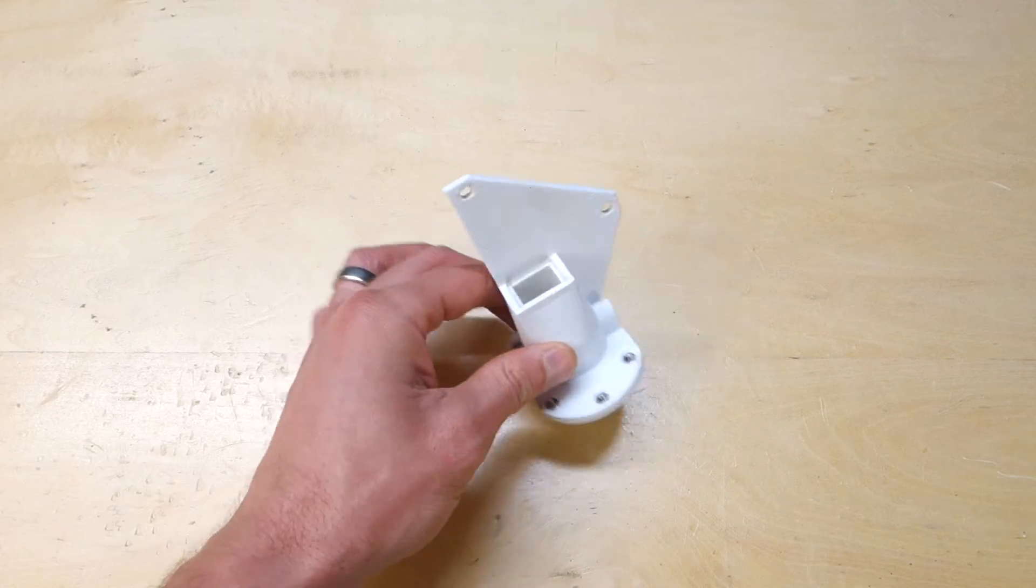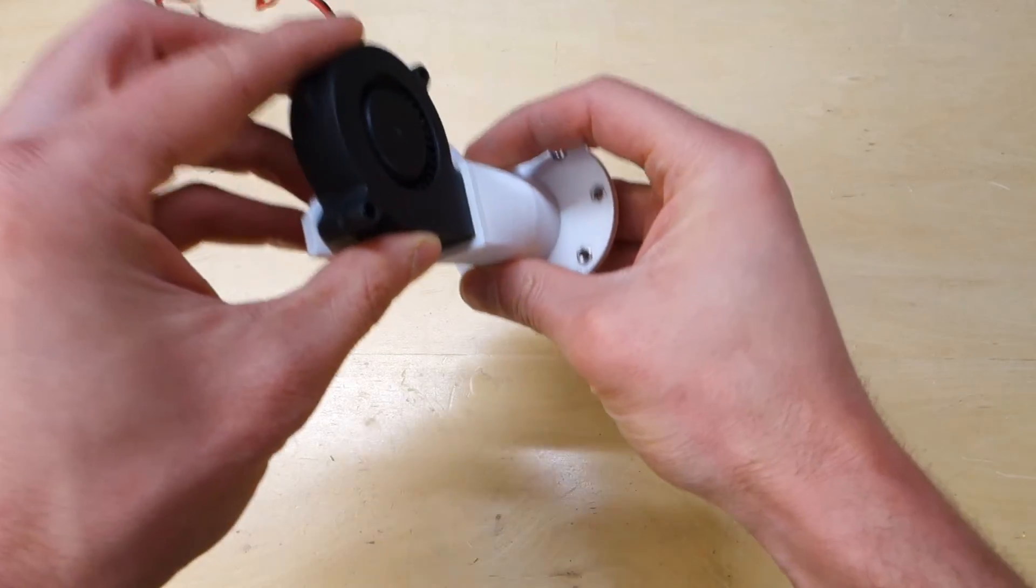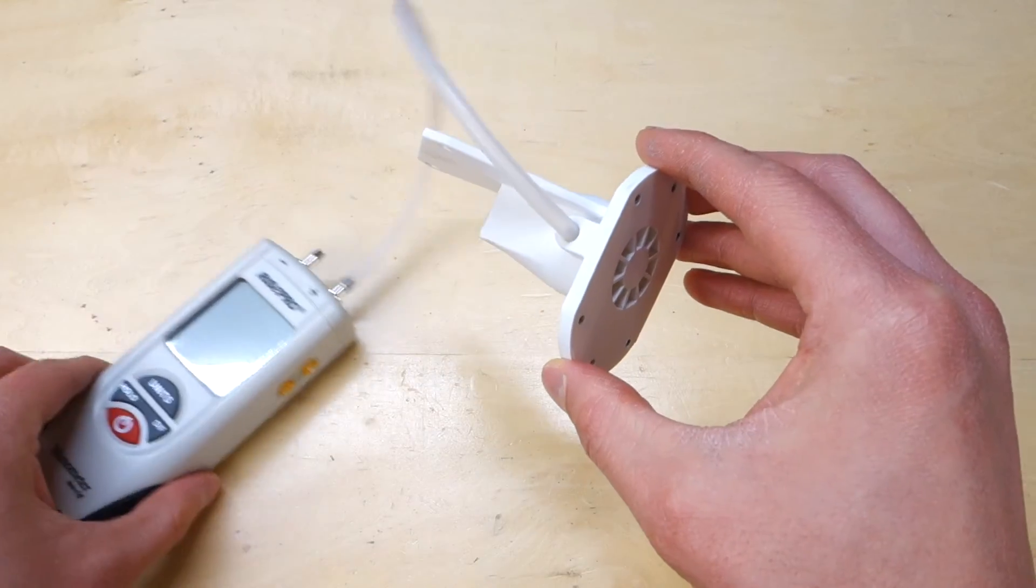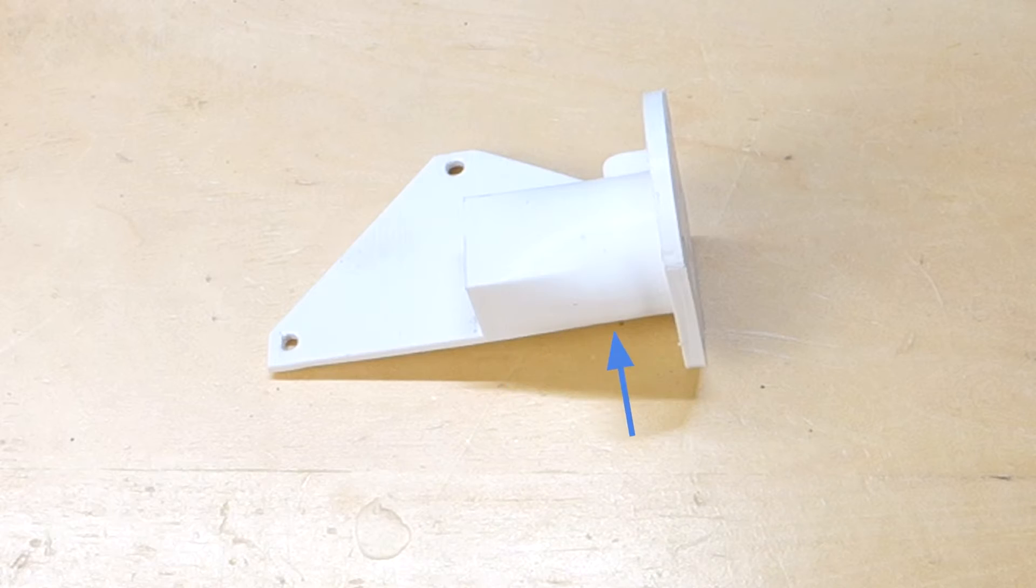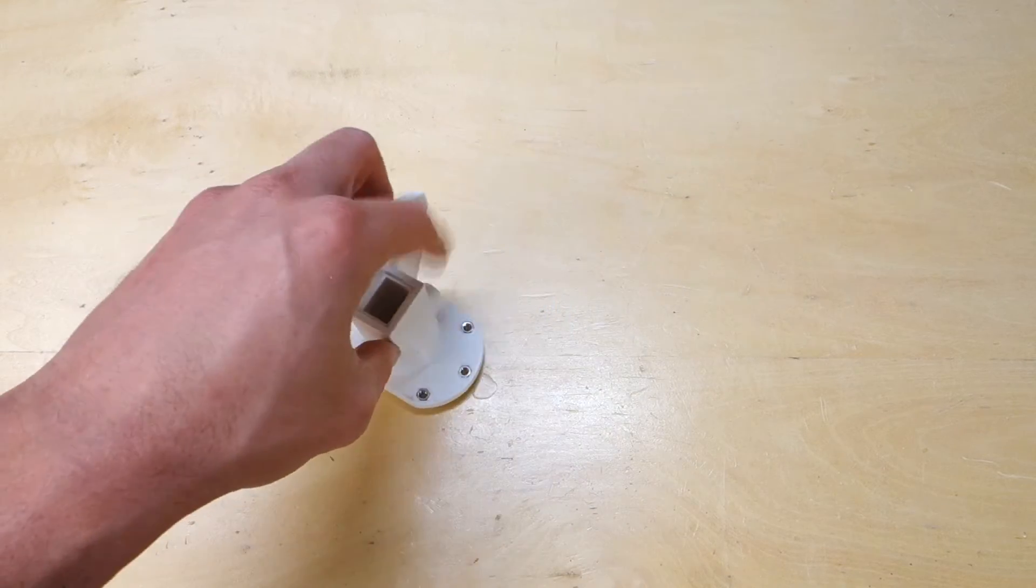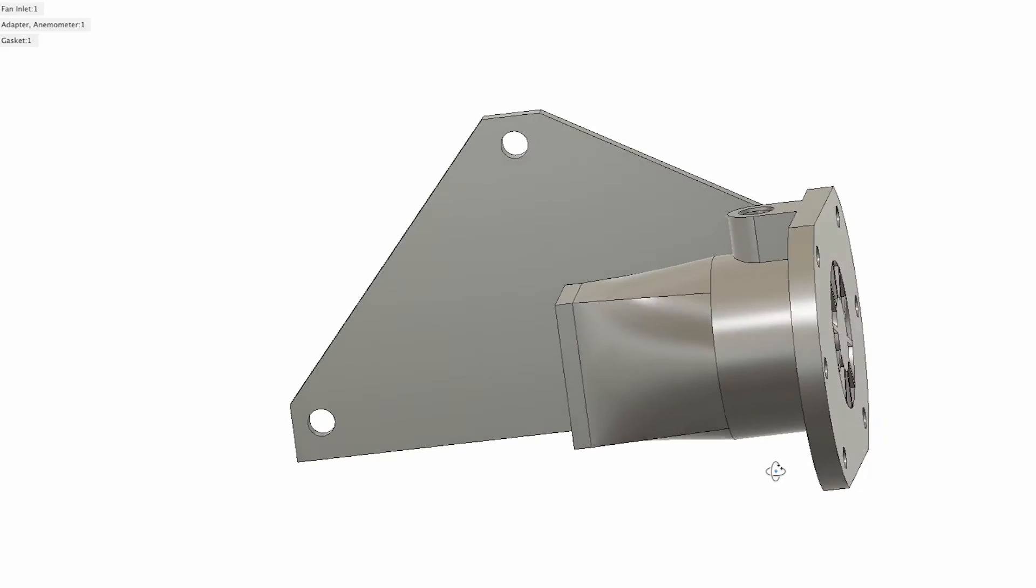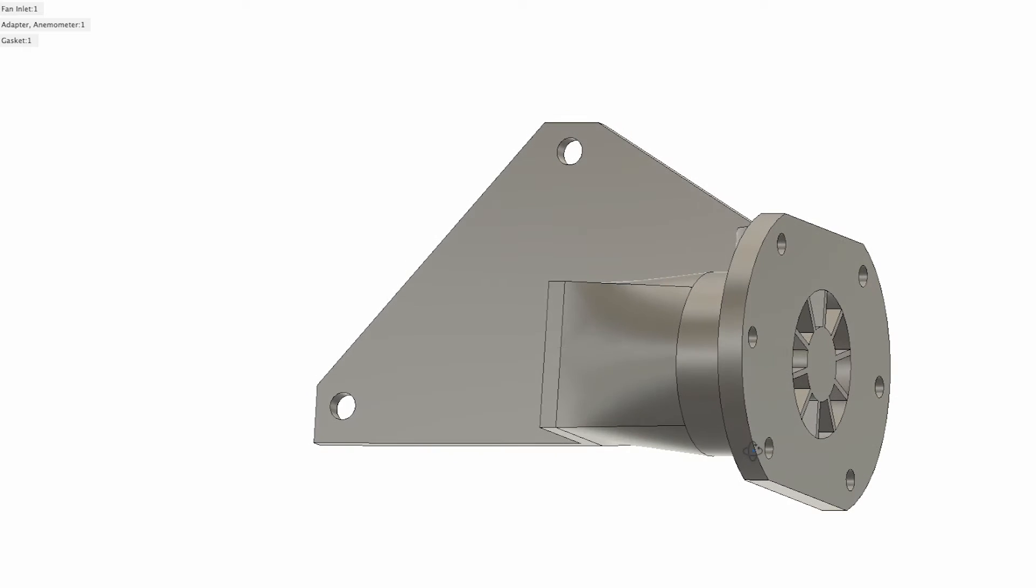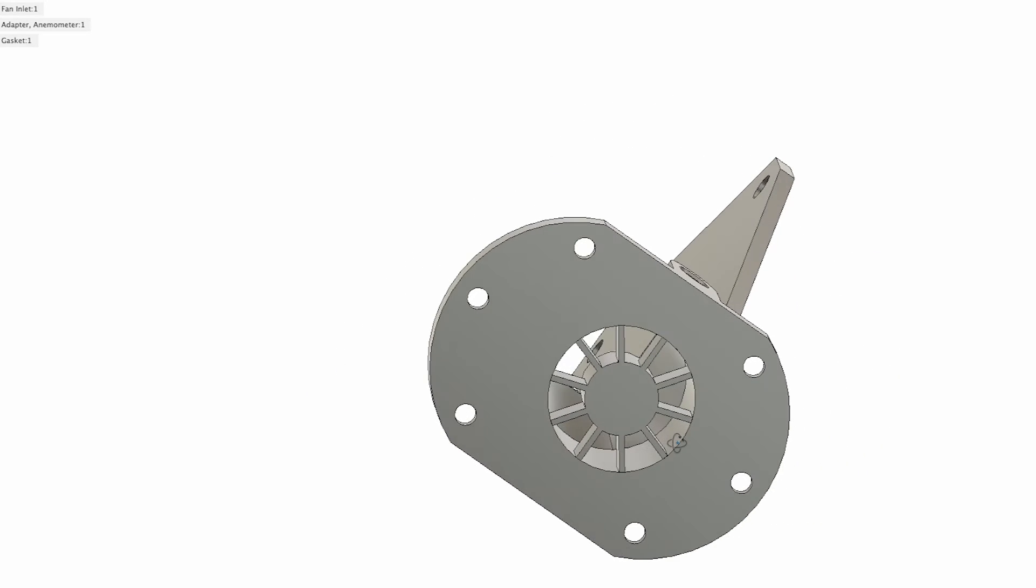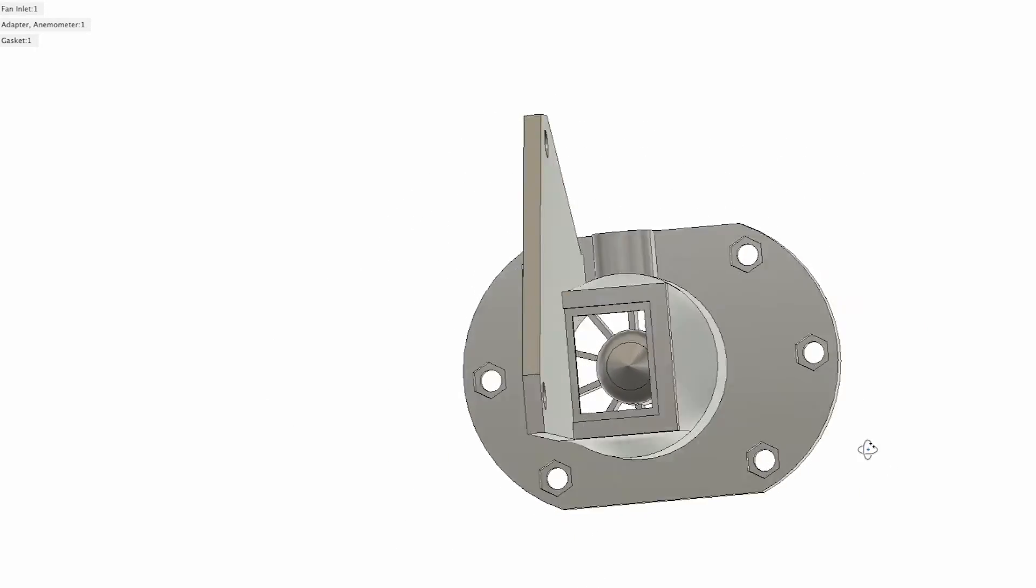Now we will also need some custom parts. First we need this fan adapter so that we can attach our fan to the anemometer. The fan adapter will need a port to measure the static pressure. Now we want to have a nice long section between the rectangular cross section and the circular cross section to help minimize any pressure losses. And I've also added some fins right before the anemometer. This will help stabilize the flow right before it goes in for the speed measurement so that we get more accurate and stable speed readings.